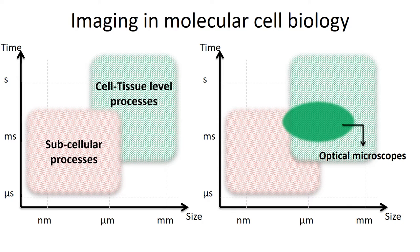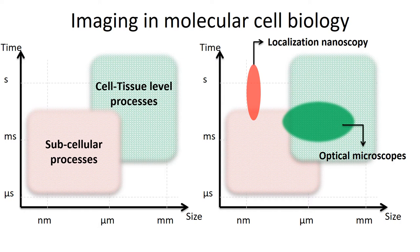The other end of the spectrum is occupied by localization nanoscopy techniques. These provide very small resolution of about 20 nanometers, however, at the cost of time. As the name suggests, these techniques computationally localize sparsely blinking fluorescent molecules over very long time, typically seconds to minutes, to capture all the structural details.